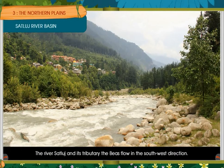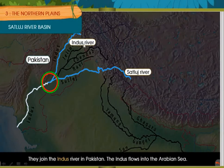The river Satluj and its tributary, the Beas, flow in the southwest direction and join the Indus river in Pakistan. The Indus then flows into the Arabian Sea. The states of Punjab and Haryana lie in the Satluj Basin.